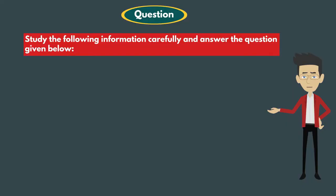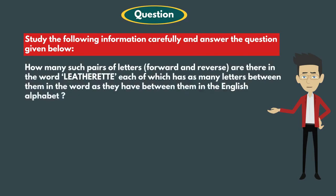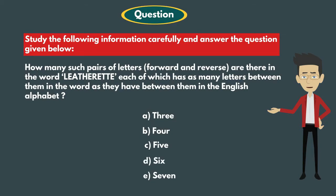Study the following information carefully and answer the questions given below. How many such pairs of letters, forward and reverse, are there in the word LEATHERETTE, each of which has as many letters between them in the word as they have between them in the English alphabet? Options are: A) 3, B) 4, C) 5, D) 6, and E) 7.